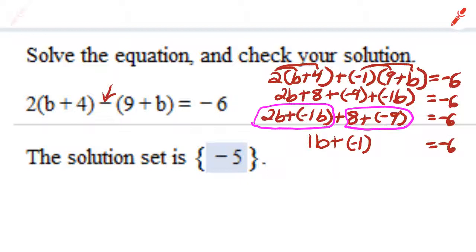Okay, now 1 times b is b. That's b plus negative 1 equals negative 6.